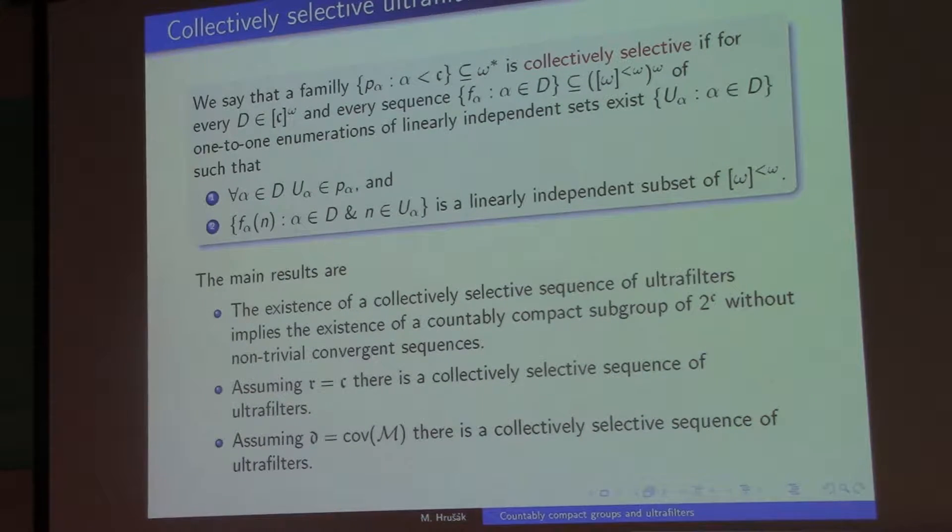And it may be surprising that the answer is very often. So I have two results. So if the reaping number is equal to c, then I can construct them. And if the dominating number is equal to ω₁, or even if just the covering of meager and the dominating number coincide, then I can construct them too.